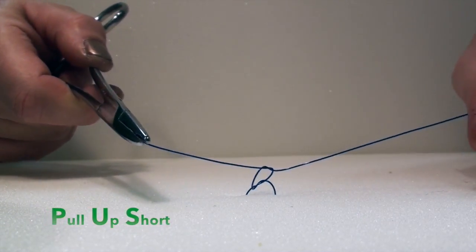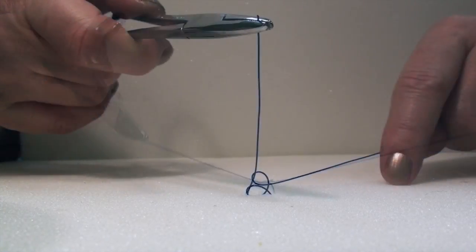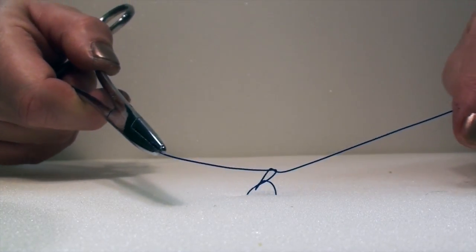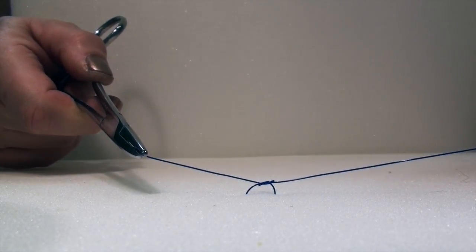Once you've achieved the desired tension, simply square the knot back by bringing the short end back to its original side.